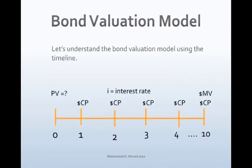The bond valuation model helps both buyers and sellers in making buying and selling decisions. It is based on the basic financial valuation model, which states that the value of any asset — both tangible and intangible — is a function of the present value of future cash flows. Let's understand the bond valuation model using a timeline, assuming the bond matures in 10 years. The question mark at period zero represents the goal: to determine the value of the bond today.